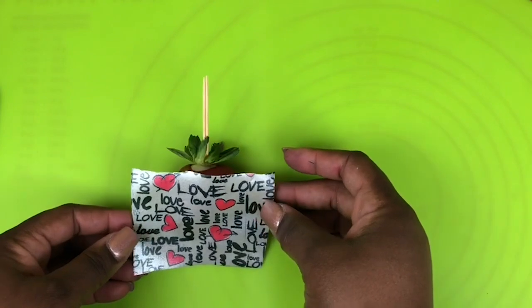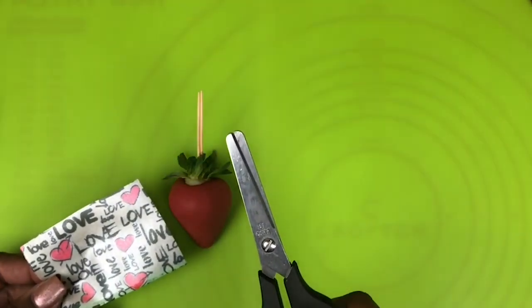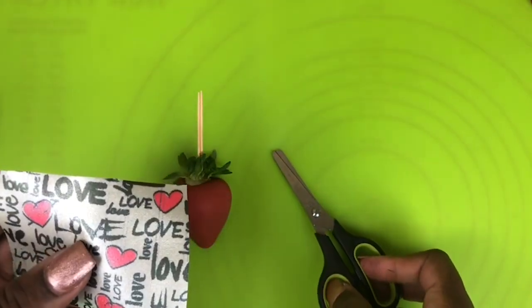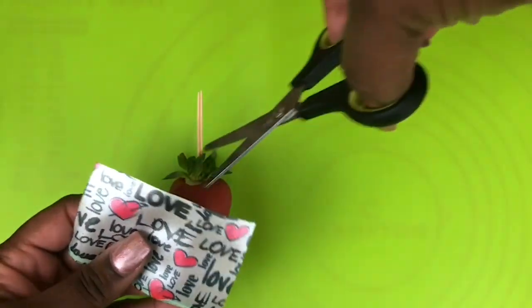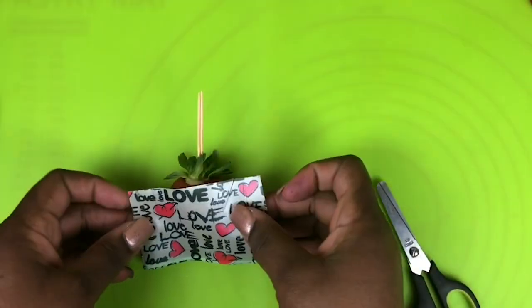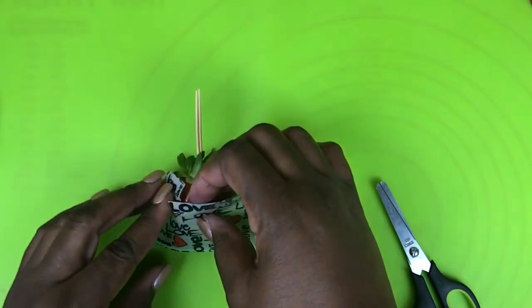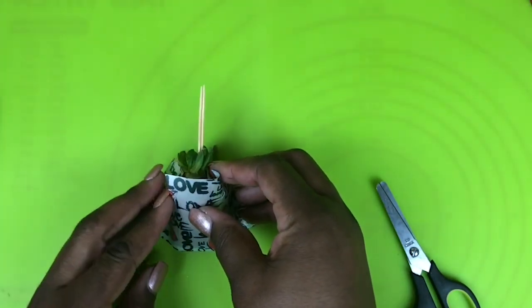Take your scissors and do two cuts at the top. Now what I'm doing here is just sizing up the strawberry to make sure it is enough and it's going to lay completely flat onto the strawberry.